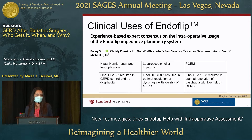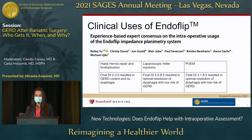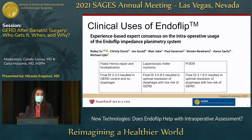For laparoscopic hiatal hernia repair and fundoplication, studies show that a distensibility index of 2 to 3.5 after fundoplication gave patients the best control of reflux with the lowest risk of dysphagia. Under 2 carries higher risk of dysphagia; over 3.5, higher risk of ongoing GERD. For patients with achalasia, Endoflip has been used during both laparoscopic Heller myotomy and POEM, with a goal distensibility of ideally above 3, and 3.5 if possible. A distensibility around 8 to 8.5 resulted in the lowest risk of GERD.